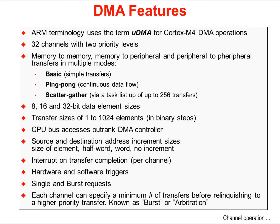ARM terminology uses the term microDMA for Cortex-M4 DMA operations. The microDMA has 32 channels and offers memory-to-memory, memory-to-peripheral, and peripheral-to-peripheral transfers. Available transfer modes are Basic, Auto where the transfer completes even if the request is removed, Ping-Pong, and Scatter-Gather with two priority levels.